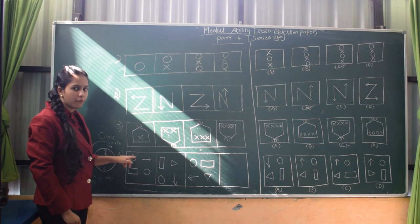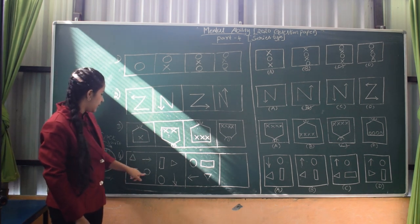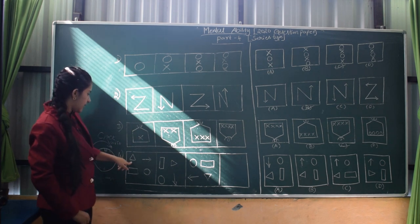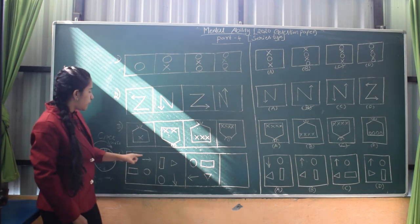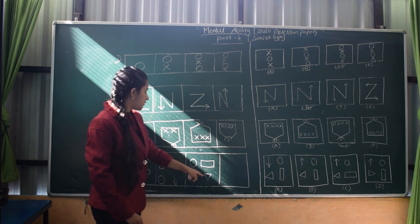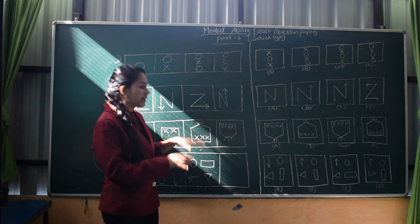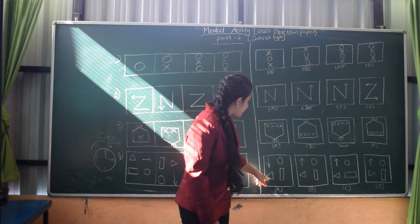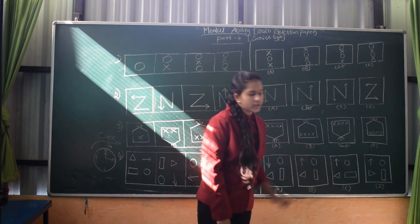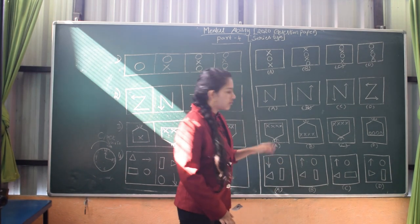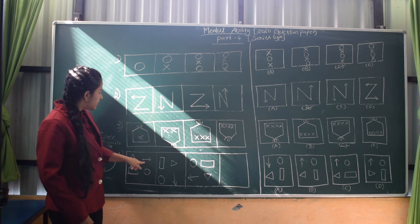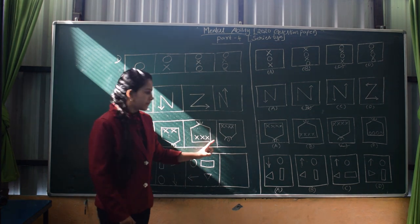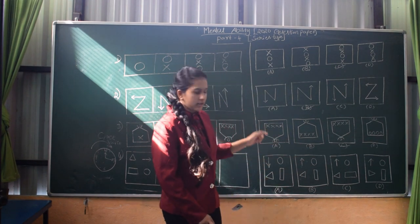Now we go to the fourth question. In this question there are four different figures: a triangle, an arrow mark, a rectangle, and a circle. Let's take the triangle first. The triangle points upward in the first figure, to the right in the second figure, and downward in the third figure — so we should get a figure where the triangle points to the left. Looking at the answer figures, in the first, second, and third options the triangle points left, but in the fourth it points right, so we eliminate the fourth. Next, looking at the arrow mark: it points right in the first figure, downward in the second, and left in the third — so in the fourth it should point upward.